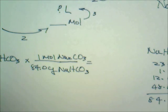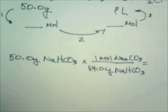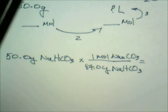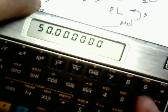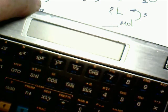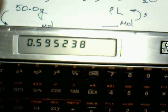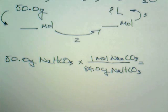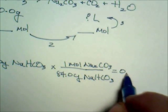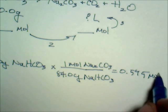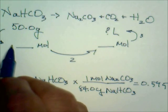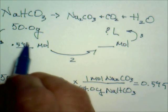We take 50 grams and divide by 84 grams per mole, which gives us 0.595 moles of sodium bicarbonate.